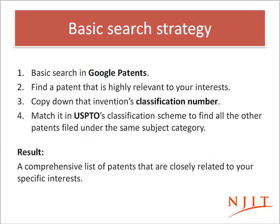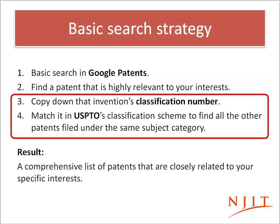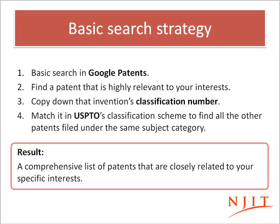In this tutorial, I'm going to be showing you a basic approach that requires a little bit of going back and forth between the two sources. The idea is that we're going to use Google Patents first to find a patent that's relevant to our interests, then take that classification number listed there back to the USPTO site and use their classification system to find more patents related to the subject.